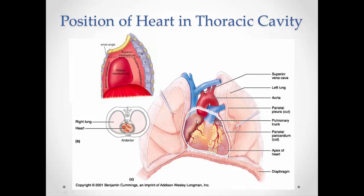The heart almost looks like it lays on its side, with the apex of the heart poking more towards the left side of the body. This causes it to push in and actually make the left lung slightly smaller because it takes up that space. The major arteries are above the heart.